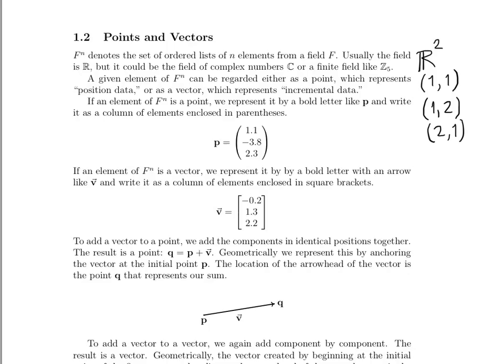Well, what's the difference between a point and a vector? First of all, a given element of F^n can be regarded either as a point, which represents position data, or as a vector, which represents incremental data or incremental change. So if an element in F^n is a point, we represent it by a bold letter p, like this,